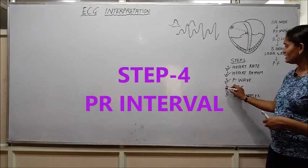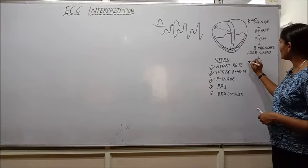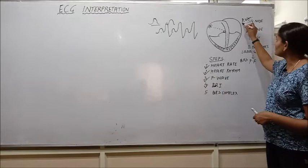So PR interval, let us see from here. This was the point where the P wave was formed and this was the point where QRS complex was formed. So if we talk about the PR interval, it means P from here and R from here.